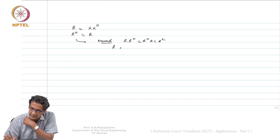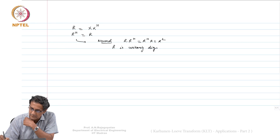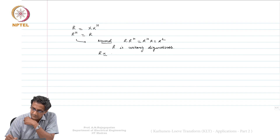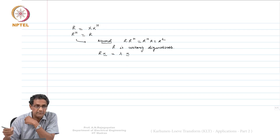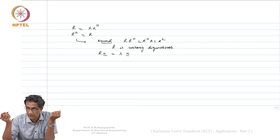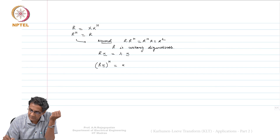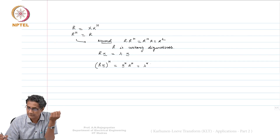This means R is unitarily diagonalizable. Coming to the eigenvalues being real: if you take an eigenvector X, it can be complex, so R times X equals lambda times X, where lambda can also be complex. If you take R X Hermitian, that equals X Hermitian R Hermitian, which on the right-hand side becomes lambda star times X Hermitian.